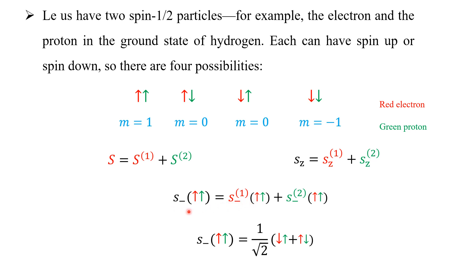This is the lowering operator. The total lowering operator can be written as the lowering operator for particle 1 plus the lowering operator for particle 2. You should remember that the lowering operator for particle 1 acts only on particle 1, and similarly the lowering operator for particle 2 acts only on particle 2. The raising operator cannot act on the two-spin-up state, because it cannot go further up, so we can only apply the lowering operator.